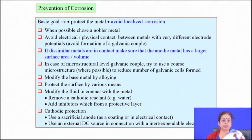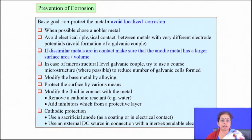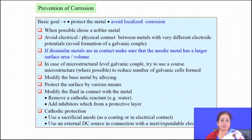Modify the fluid by application of different inhibitors, and use cathodic protection or anodic protection. Cathodic protection uses a sacrificial anode or an external DC source connected with an inert or expanded cable. These are the different precautionary measures you must take to get rid of aqueous corrosion problems. For high temperature oxidation, you have to apply certain alloying elements on the surface by pack cementation or laser surface alloying.